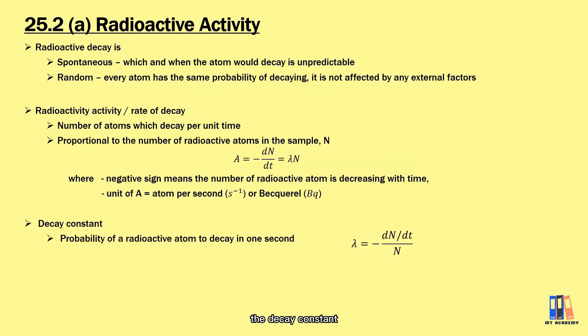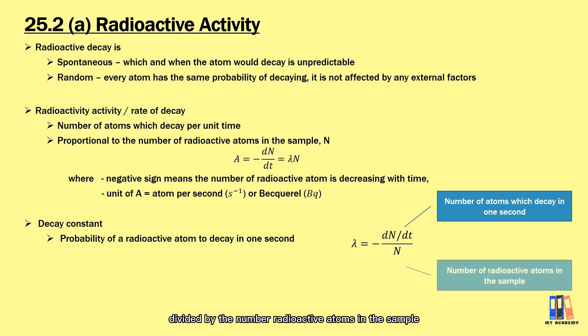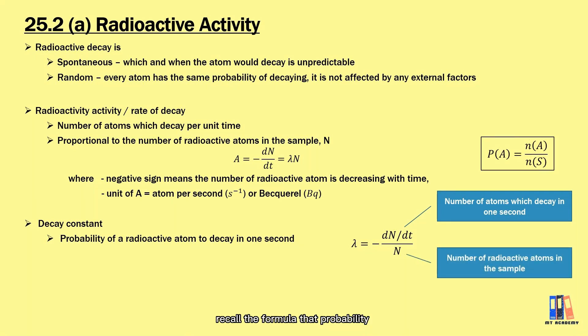The lambda in the formula is the decay constant, defined as the probability of a radioactive atom to decay in one second. If you rearrange the formula and check back the definition of each of the terms here, the number of atoms which decay per second divided by the number of radioactive atoms in the sample, recall the formula that probability dN/dt pa = Na/Ns, they are similar.